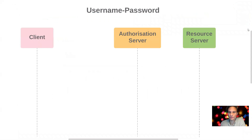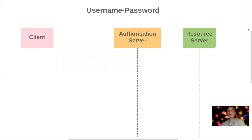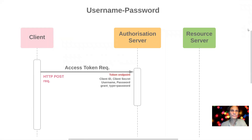Running through the steps of this flow: this involves a client application, the authorization server that checks the credentials of the users being authorized, and the resource server which will be integrating with the client application. The flow involves an access token request to the token endpoint of the auth server — an HTTP POST out-of-band request.